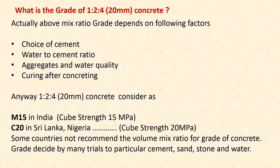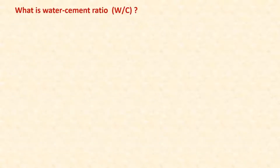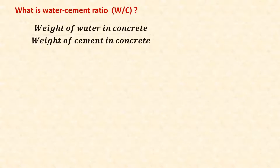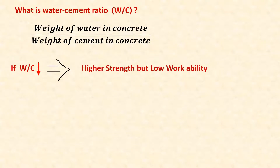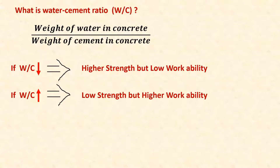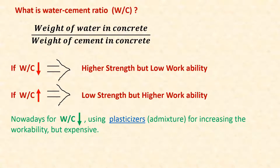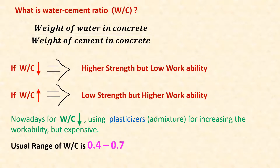What is the water-cement ratio? It is the weight of water in concrete divided by the weight of cement in concrete. Decreasing the water-cement ratio results in higher strength but lower workability. Nowadays, plasticizers — a type of admixture — are used to increase workability at lower water-cement ratios, but they are expensive. The usual range of water-cement ratio is 0.4 to 0.7.